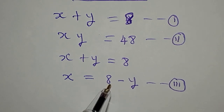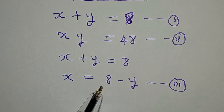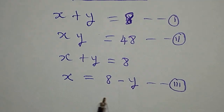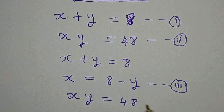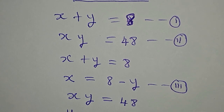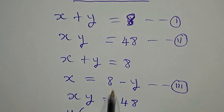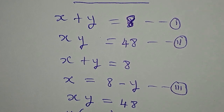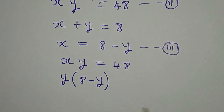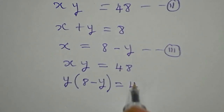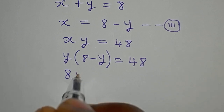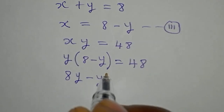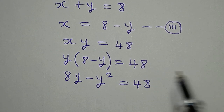The next step is to substitute equation 3 into equation 2, where we have xy equals 48. In place of x, I'll write y first, then x becomes 8 minus y, and we equate this to 48. Opening the bracket gives us 8y minus y squared equals 48.